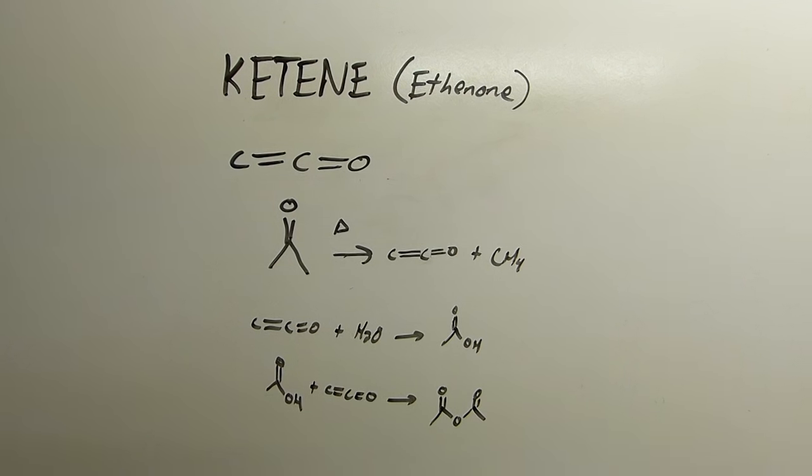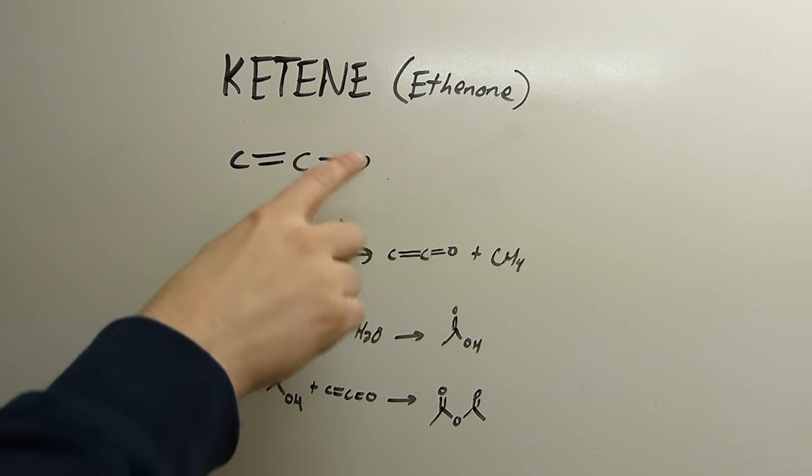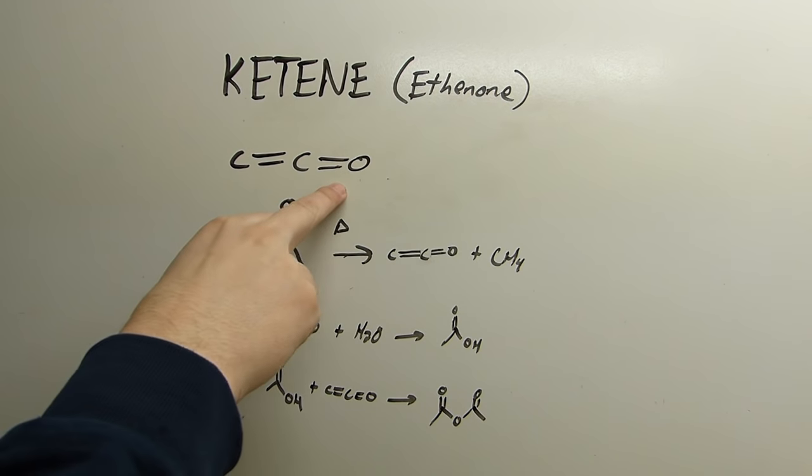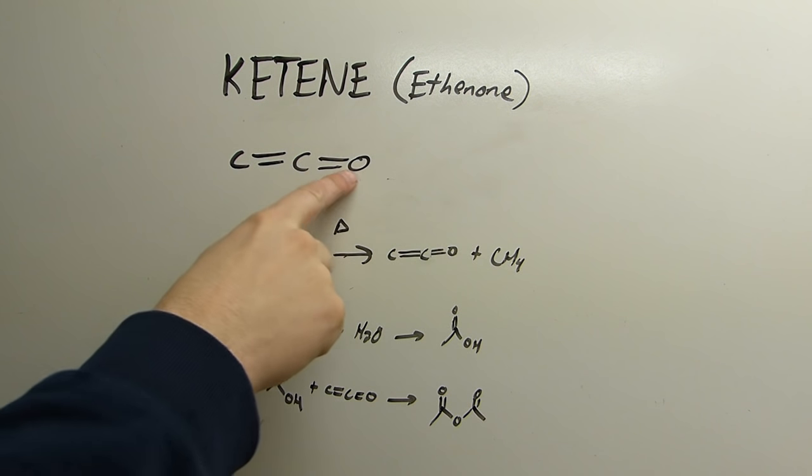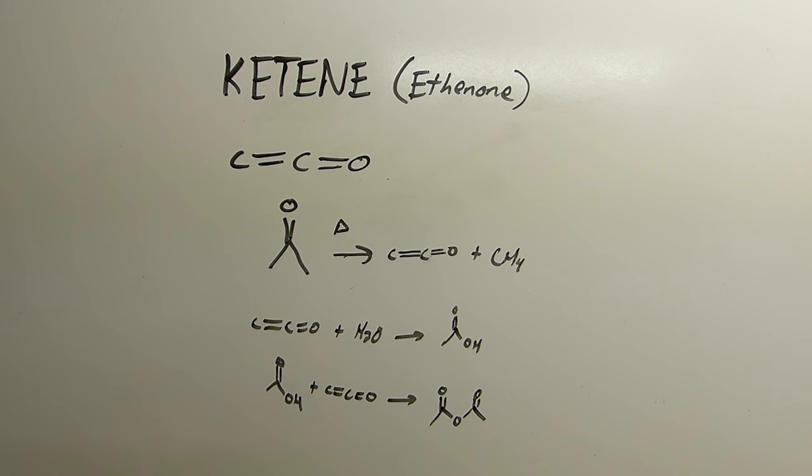So today I'll be making a compound called ketene, which in standard nomenclature is ethenone, but it's commonly called ketene. Unfortunately, ketenes are also a class of compounds, which just have this sort of structure here, basically a ketone which is right next to a double bond there. So you get a ketone, right? So anyway, ketene itself though is commonly referred to as this compound here.